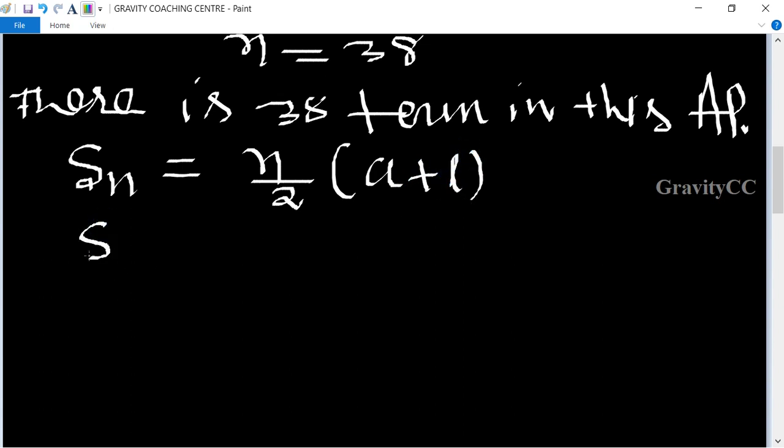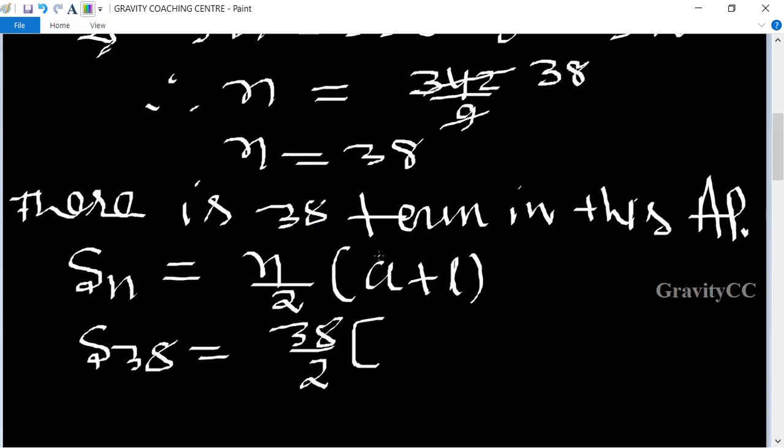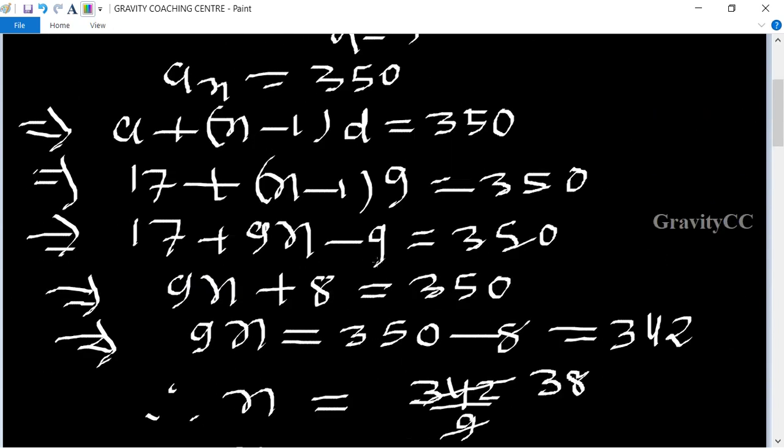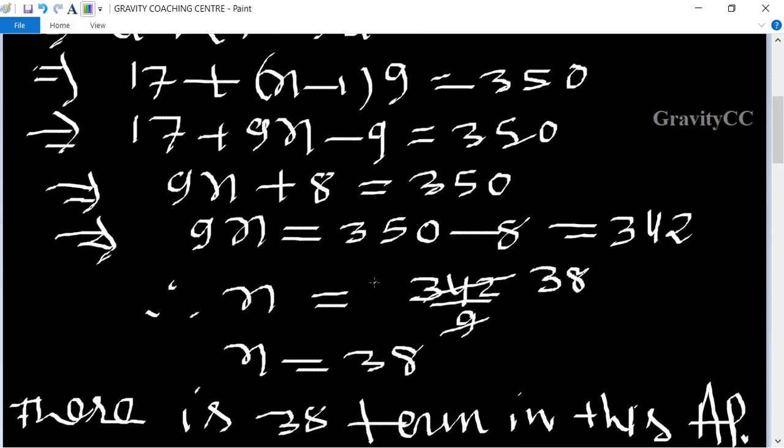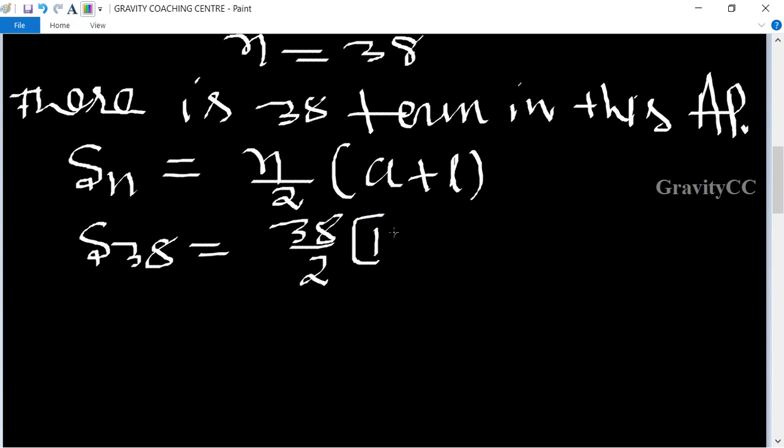So here n is 38, so S38 equal to 38 upon 2, and bracket a equal to 17 and last term is 350, so 17 plus 350.